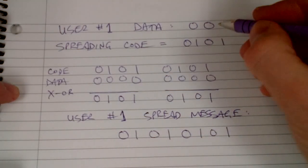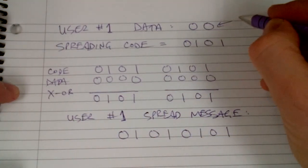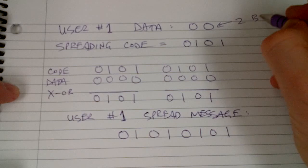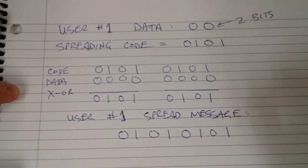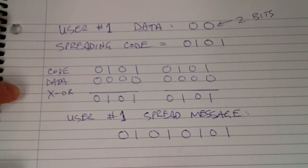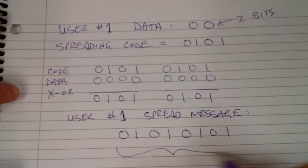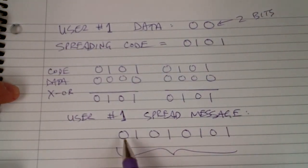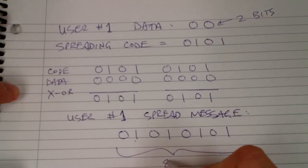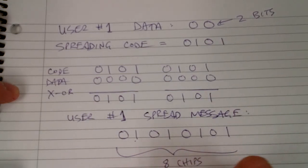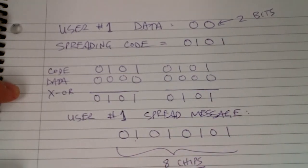So the data itself is two bits, and the spread message is eight chips.